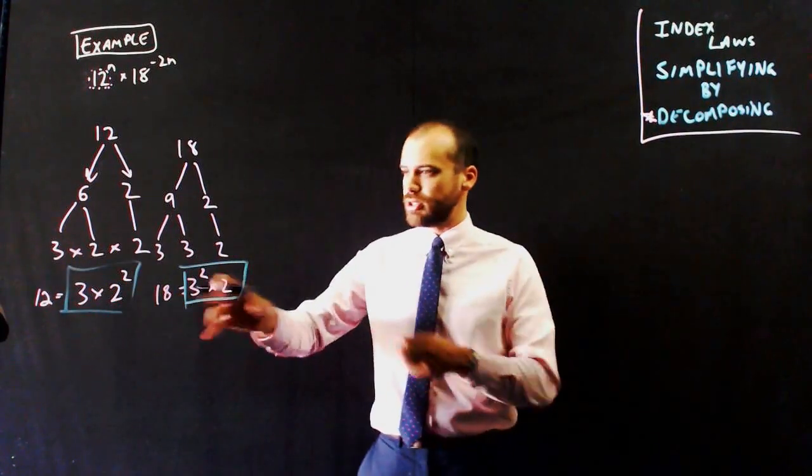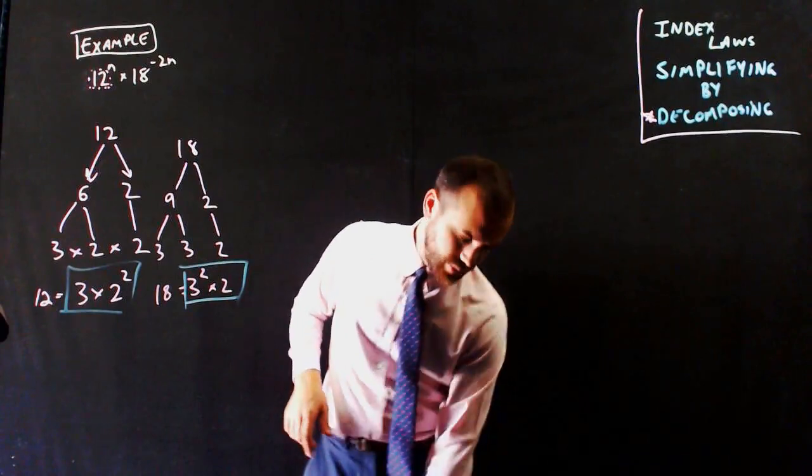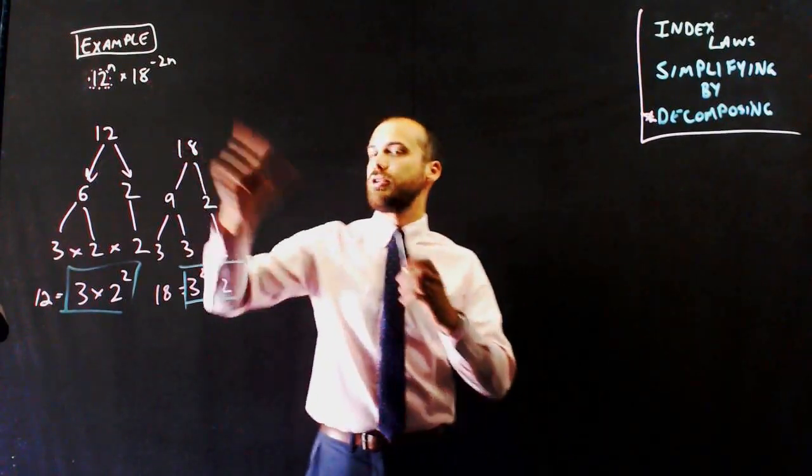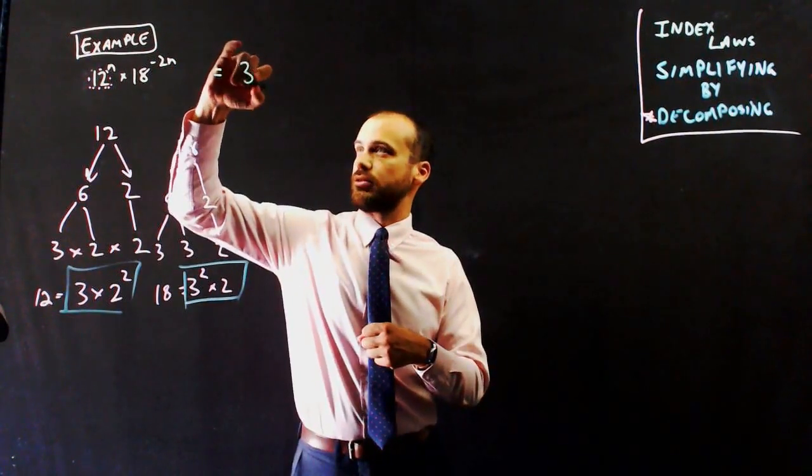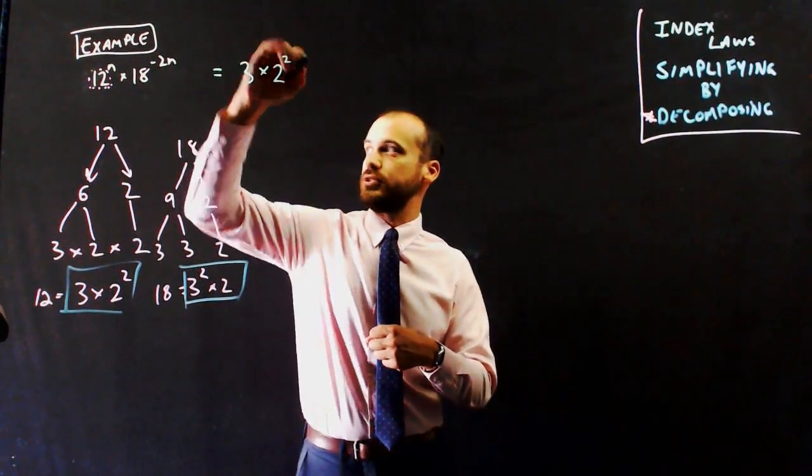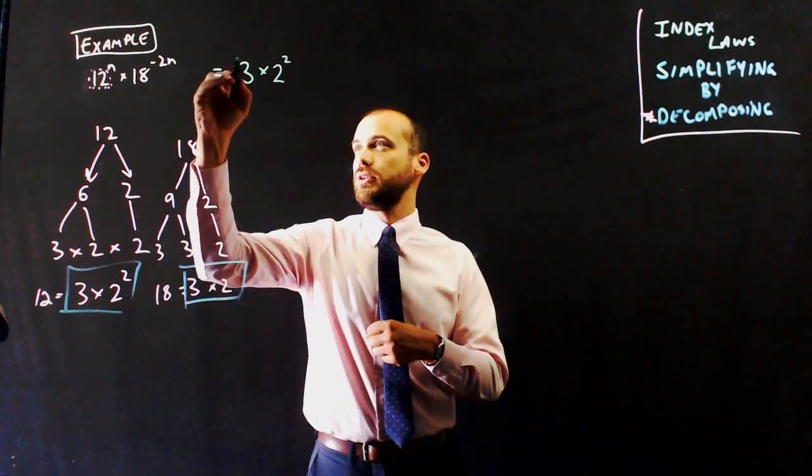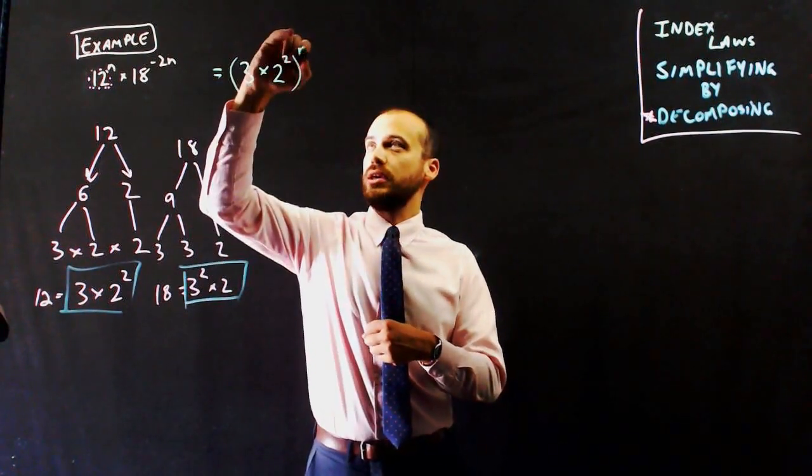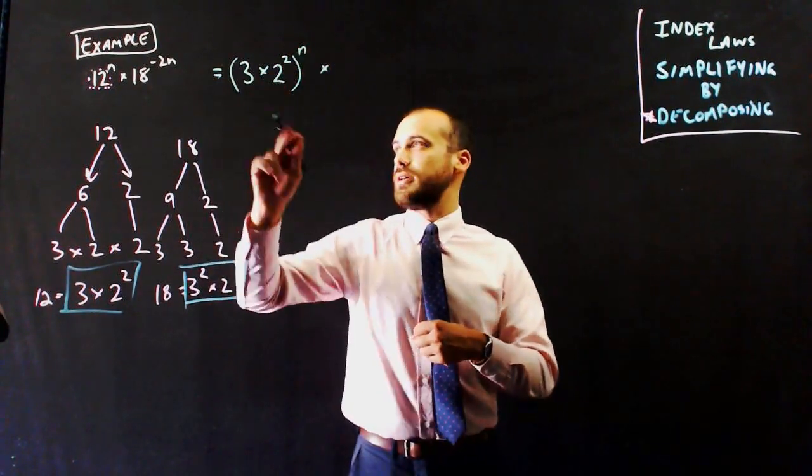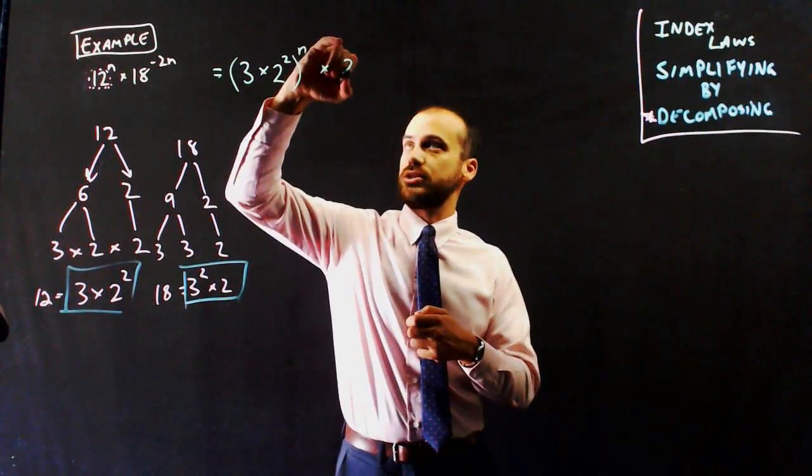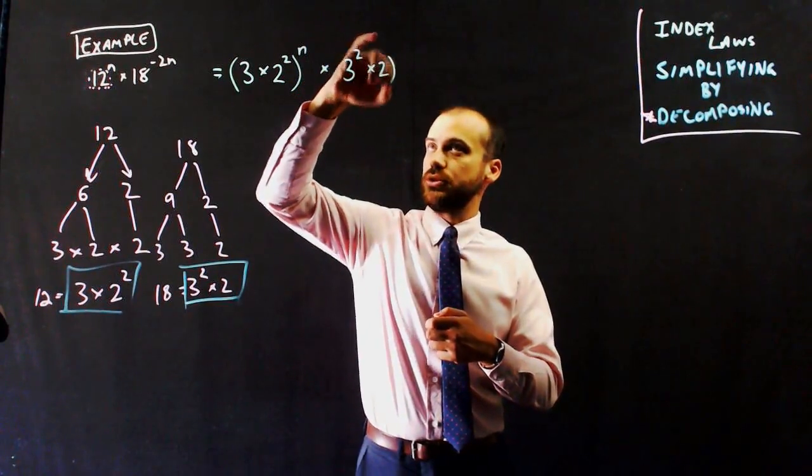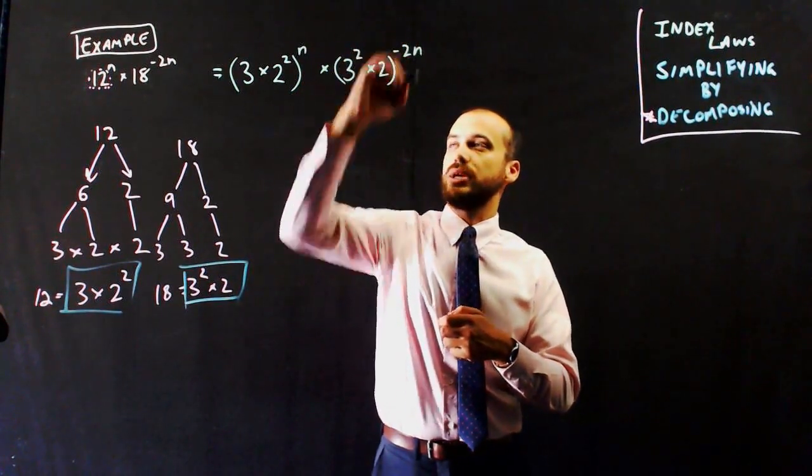Using those prime decompositions, I can rewrite this question. Instead of 12, it's 3 times 2 to the power of 2, that's 12, all to the power of n. And 18 is going to be 3 squared times 2, all to the power of negative 2n.